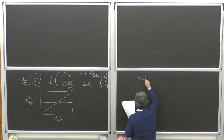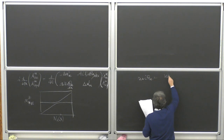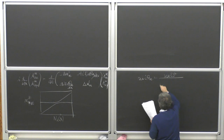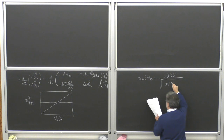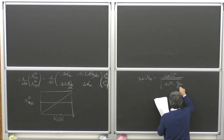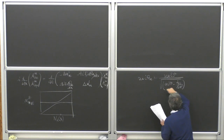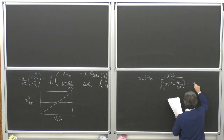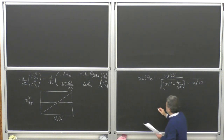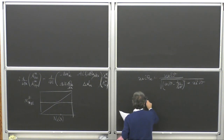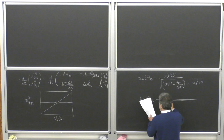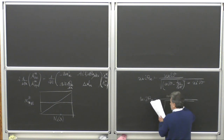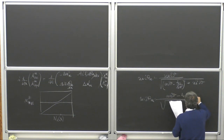We had: sin 2 theta_m equals sin 2 theta divided by the square root of (cos 2 theta minus A/delta m²) all squared plus sin² 2 theta. And cos 2 theta_m equals the same square root but with (cos 2 theta minus A_cc / delta m²) in the numerator.